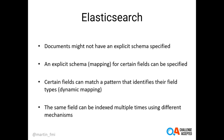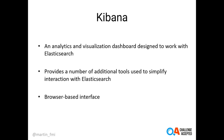Another main difference with a traditional relational database is that in Elasticsearch, documents might not have an explicit schema specified. If you don't specify an explicit schema for documents stored in Elasticsearch — which are based on JSON format — Elasticsearch tries to deduce the schema itself and creates one for you. Certain document fields can match a pattern that identifies their field type through so-called dynamic mapping. The same field can also be indexed multiple times using different mechanisms or types in the same index.